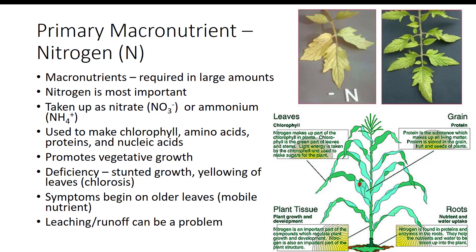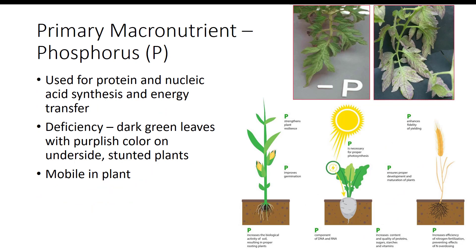Nitrogen is highly soluble in water and very mobile. So it can be lost from the soil by leaching, by runoff, by being tied up on soil colloids, or by being taken up by the plant. Phosphorus is used for protein and nucleic acid synthesis and energy transfer processes in plants involving adenosine triphosphate (ATP) and adenosine diphosphate (ADP). Deficiency symptoms include dark green leaves with a purplish color on the underside and stunted plants. Phosphorus is mobile in the plant and moves from older to younger leaves when a deficiency exists.